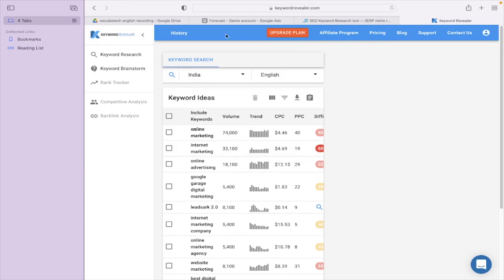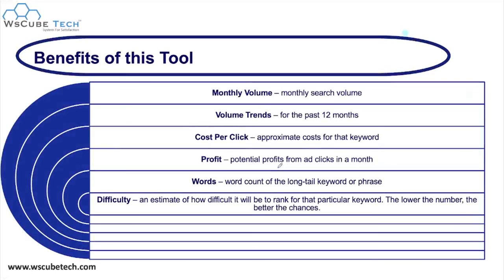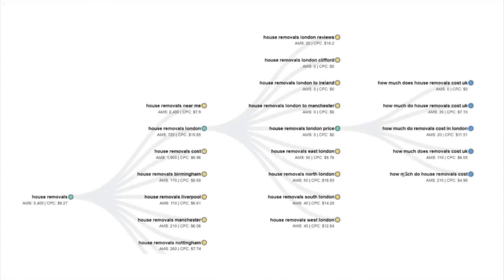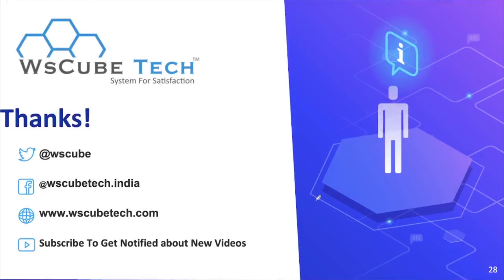With Keyword Revealer you can view monthly volume, CPC, words — meaning the word count of long-tail keywords or phrases — and difficulty, which estimates how hard it will be to rank for a keyword; the lower the number, the better your chances. You can see related keywords and similar keyword groups for your seed keyword, helping you build an effective keyword strategy for your organization.